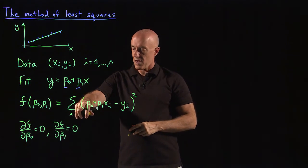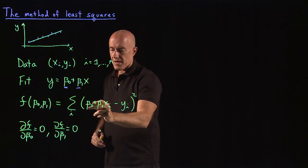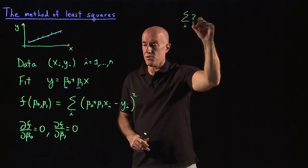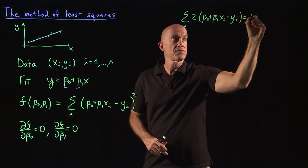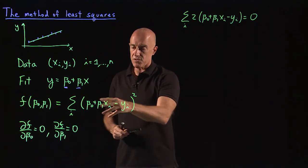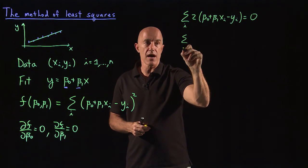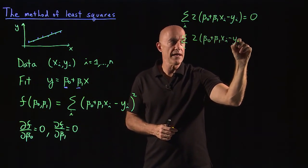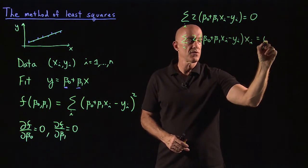Taking the derivative with respect to beta_0: we bring down the 2 and set it equal to zero, giving sum over i of (beta_0 + beta_1 * x_i - y_i) = 0. For the partial of F with respect to beta_1, we apply the chain rule — the derivative of the outside times the derivative of the inside. The inside brings out an x_i, giving sum over i of (beta_0 + beta_1 * x_i - y_i) * x_i = 0.